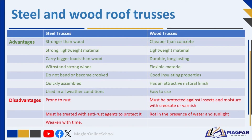Advantages of steel roof trusses include that they are stronger than wood, strong but lightweight, able to carry bigger loads than wood, and can withstand strong winds. Some disadvantages of steel trusses are that they are prone to rust and must be treated with anti-rust agents. Wood roof trusses are cheaper, lightweight, have good insulating properties and an attractive natural finish. Disadvantages of wood trusses are that they must be protected against insects and moisture with varnish, and they rot in the presence of water and sunlight.